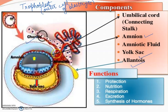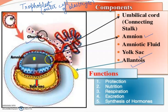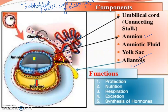Amnion ke baare mein - students, yeh jo region hai, amnion ka hai. This is the inner membrane that surrounds the embryo. Between the amnion and embryo, there is present the amniotic cavity. A big name here - amniotic cavity, aur is mein amniotic fluid hoga.